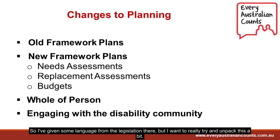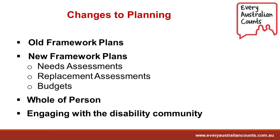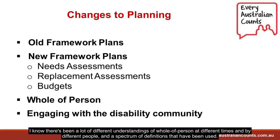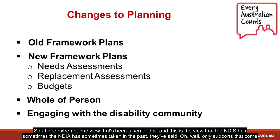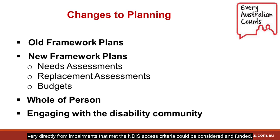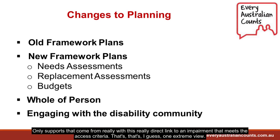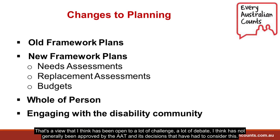There have been a lot of different understandings of whole of person at different times. At one extreme — a view the NDIA has sometimes taken in the past — only supports that come very directly from impairments that met the NDIS access criteria could be considered and funded. That's a view that has been open to a lot of challenge and has not generally been approved by the AAT in its decisions. At the other extreme, there have been suggestions that once you're in the NDIS, it should fund any need a person has from any impairment, regardless of whether that impairment could meet the NDIS access criteria.